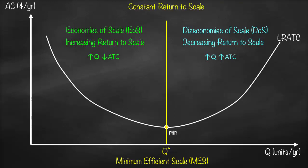At MES we have constant return to scale, which means this will be our optimum level of output because at this point we have our lowest average total cost.